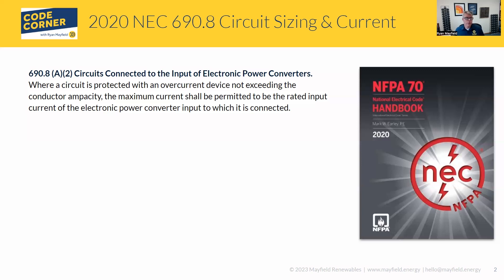What the code language says is: where a circuit is protected with an overcurrent device not exceeding the conductor ampacity, the maximum current shall be permitted to be the rated input current of the electronic power converter to which it's connected. What the code is talking about here is that in a lot of cases in our PV systems, we are doing a larger DC input compared to the AC output of the inverter.